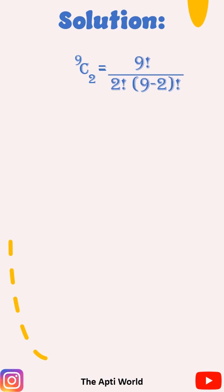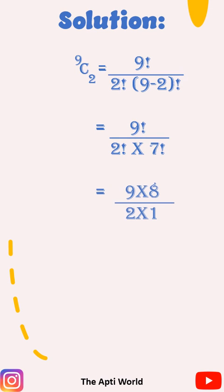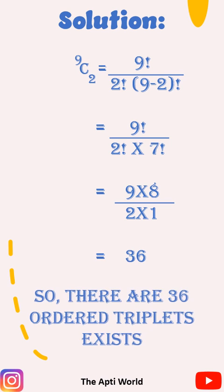So, 9 C2, equal to 9 factorial divided by 2 factorial 9 minus 2 factorial. Which is equal to 9 factorial divided by 2 factorial multiplied by 7 factorial. Which is equal to 9 multiplied by 8 divided by 2 multiplied by 1. Which is equal to 36. Therefore, there are 36 different combinations for getting the sum of 3 natural numbers which gives 10.